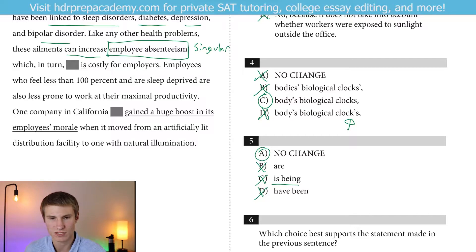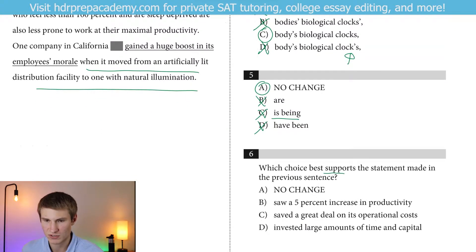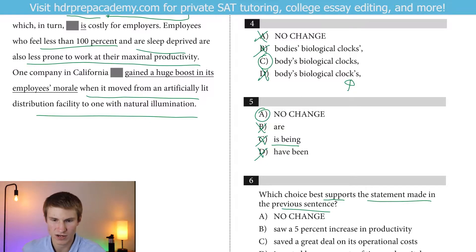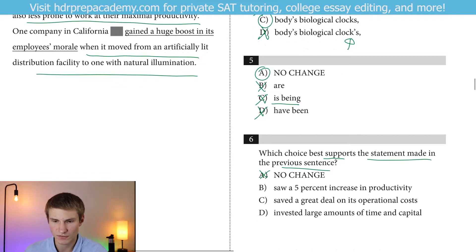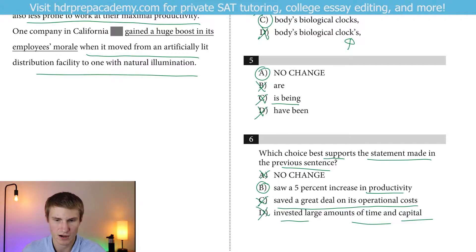Employees who feel less than 100% or are sleep deprived are also less prone to work at their maximal productivity. One company in California gained a huge boost in its employees' morale — and then we're asked which choice best supports the statement made in the previous sentence. We know the previous sentence talked about workers who are feeling less than 100% and sleep deprived will not achieve their maximal productivity. So we want to talk about productivity, not morale — get rid of A. Answer choice B: 'saw a 5% increase in productivity' — yes, that is supporting what we just said. Our answer would be B for number 6.